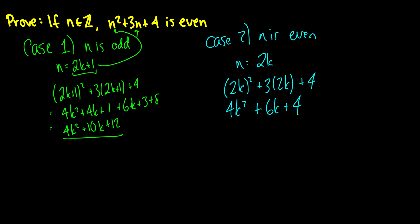Again the whole thing is going to be divisible by 2, therefore we know that it is going to be even if our n is even as well. Because we've proven that both are even, independently both can become even, we can conclude that n squared plus 3n plus 4 is always going to be even if n is an integer.